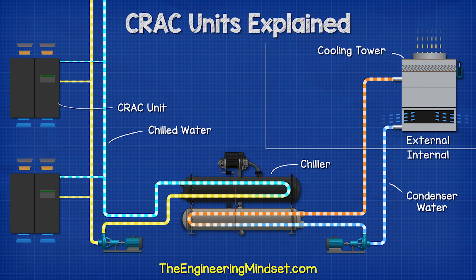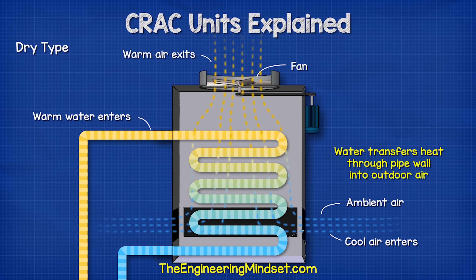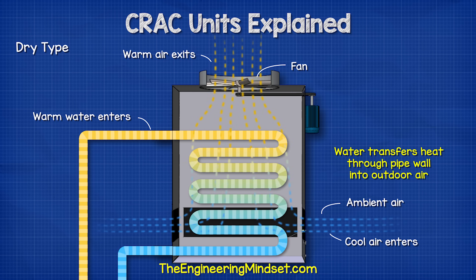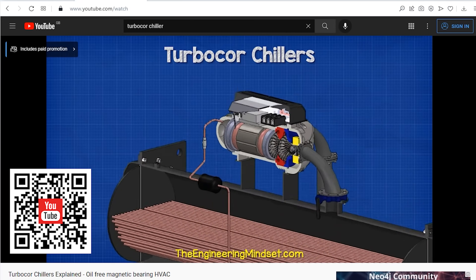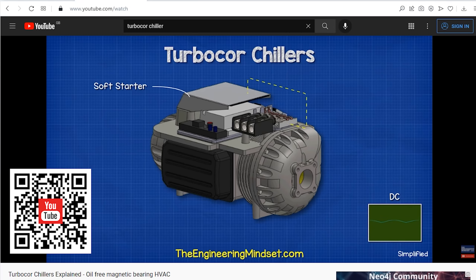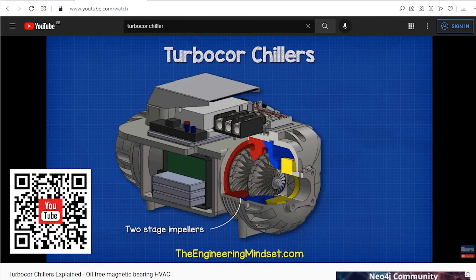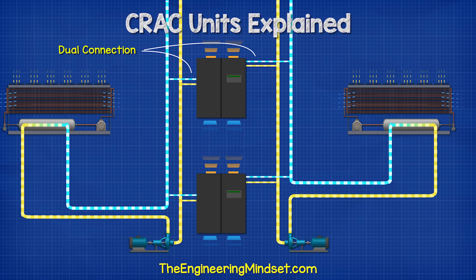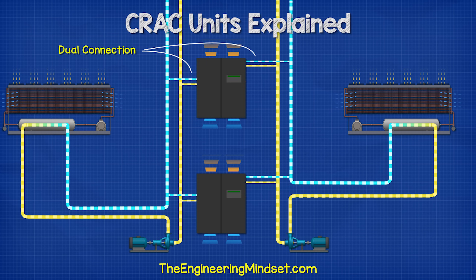The water then returns to the condenser much cooler, ready to collect more thermal energy. We can also get dry cooling towers, which are less efficient — in this case, the condenser water flows through a heat exchanger with air blown over it to remove the heat, instead of being sprayed into the airstream. Some CRAC units are connected to multiple cooling systems to ensure cooling is always available, even if one unit fails.